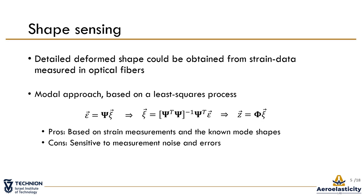Fiber optic strain sensors have seen widespread use in aerospace in recent years. The advantages are high sample rate, high accuracy, and easy installation — therefore a good fit for shape sensing. However, all measurements are subject to noise which spoils the results. Additionally, the system can experience process noise such as turbulence or gust disturbances.